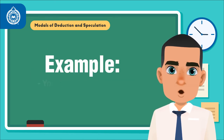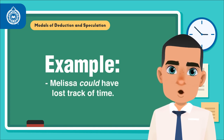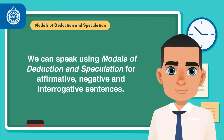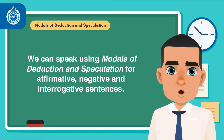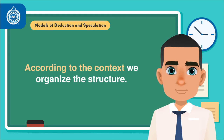For example: you may have not done the dishes this morning. Melissa could have lost track of time. Similarly to the previous example, in this context we can speak using modals of deduction and speculation for affirmative, negative, and interrogative sentences, and according to the context we organize the structure.